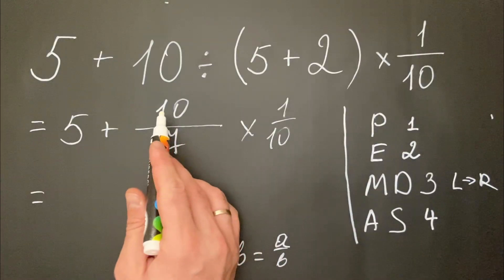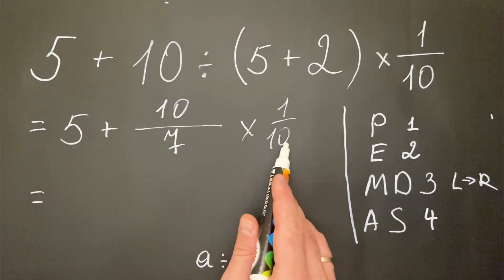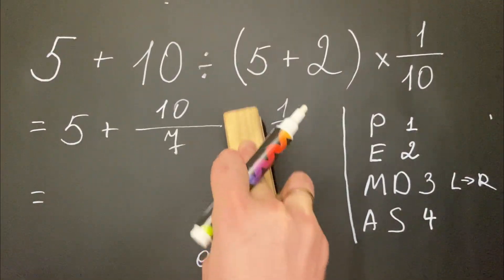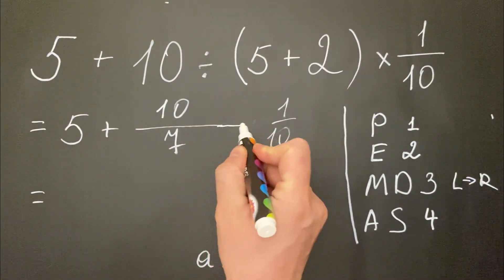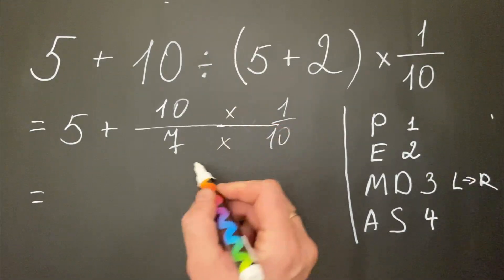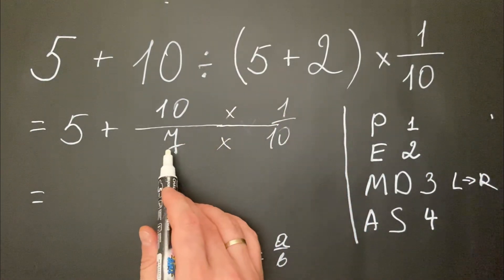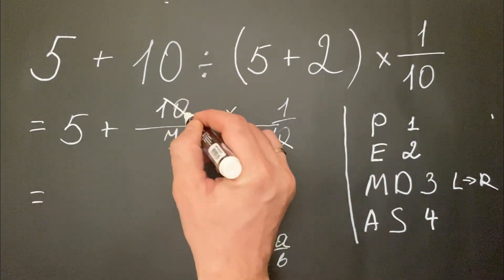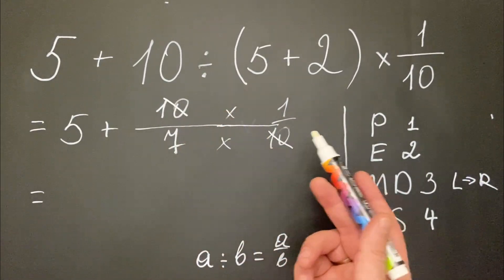We can simplify by 10. So basically we have 10 multiplied by 1 over 7 multiplied by 10. Therefore we can simplify 10 with 10, because simplifying means 10 divided by 10, which equals 1.